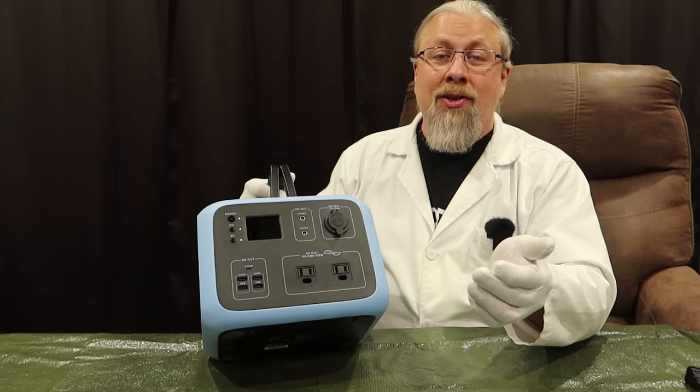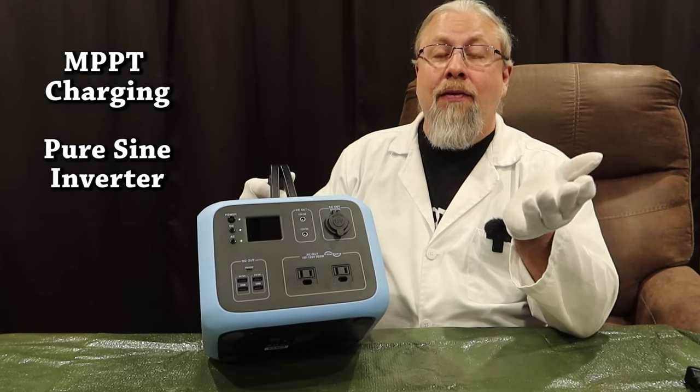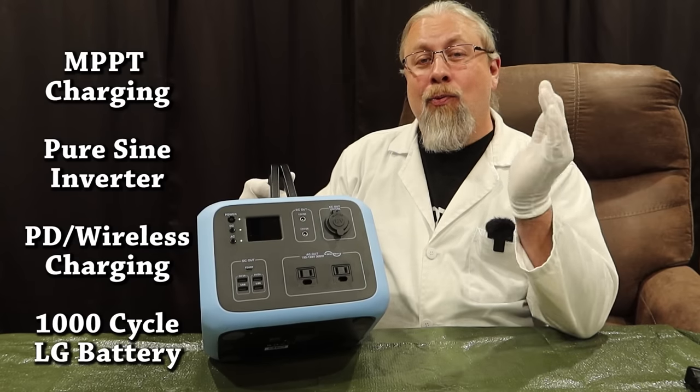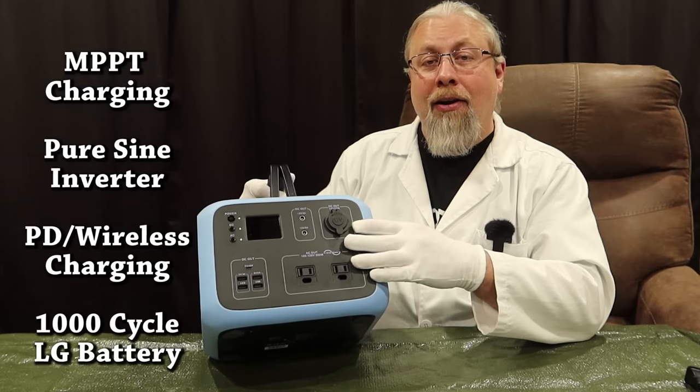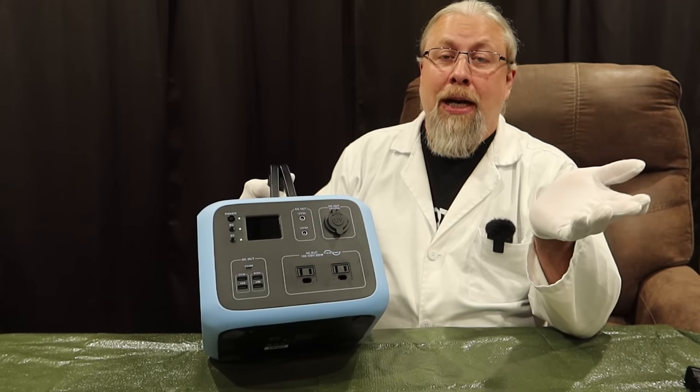The AC50S also sports faster MPPT charging, a pure sine inverter, power delivery and wireless charging, and sports a 1000 cycle lithium-ion battery. Is this finally the holy grail of mid-range portable power stations? Let's find out.